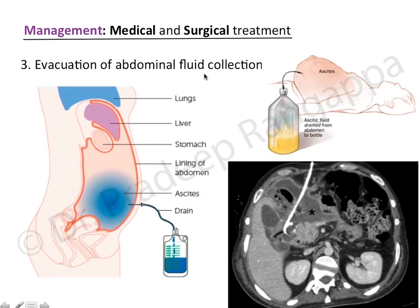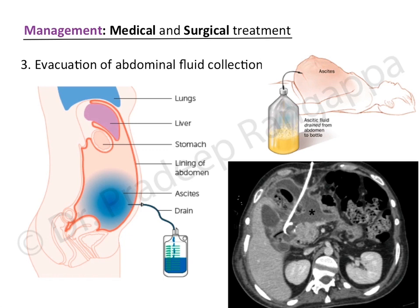The third management approach is to evacuate all abdominal fluid collections. Ascites must be drained; pleural fluid and focal abdominal collections also contribute to rising intra-abdominal pressure and should be drained using pigtail catheters under ultrasound guidance. A common clinical scenario is dengue with over-resuscitation causing massive ascites — draining it prevents progression to compartment syndrome, worsening hypotension, and rising airway pressures.